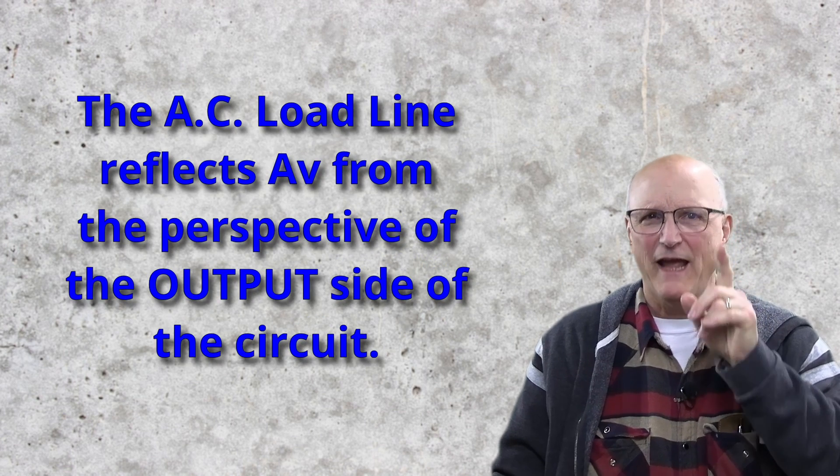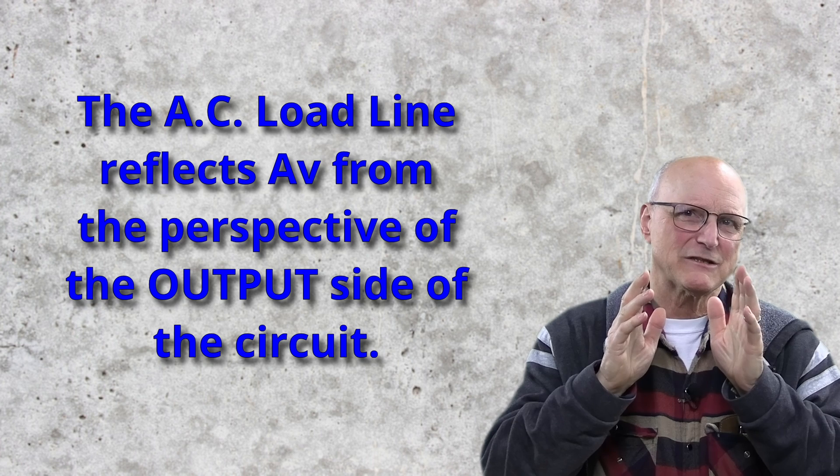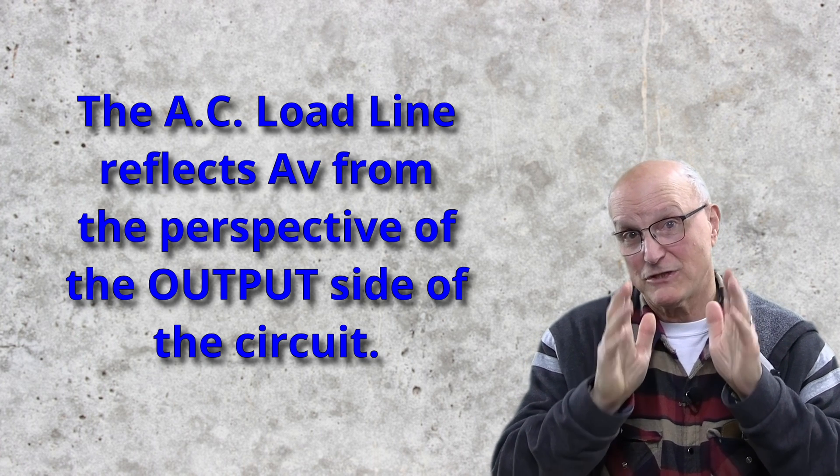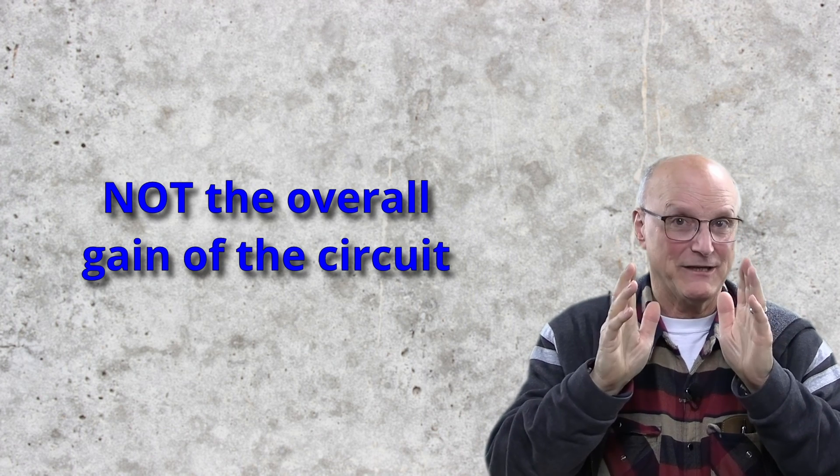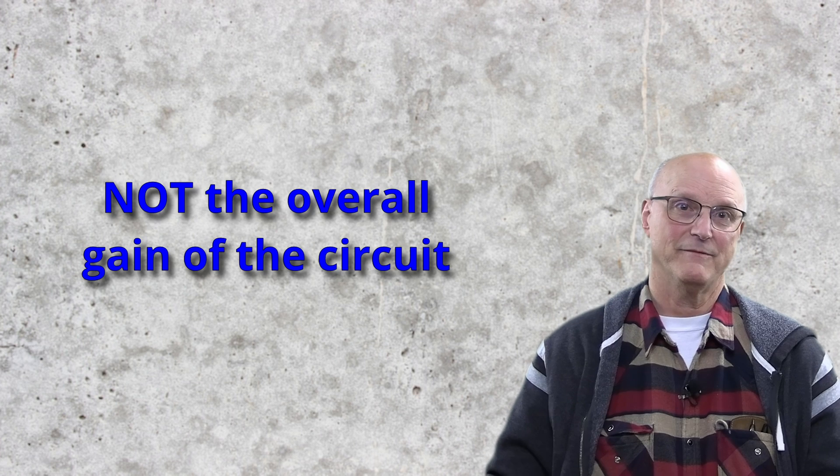Well, remember, the AC load line reflects the gain of the transistor from the perspective of the output side of the circuit. It does not show the overall gain of the entire circuit. The voltage gain of the entire circuit is dramatically different because of two aspects of transistor circuits that the AC load line and DC load line do not reflect.